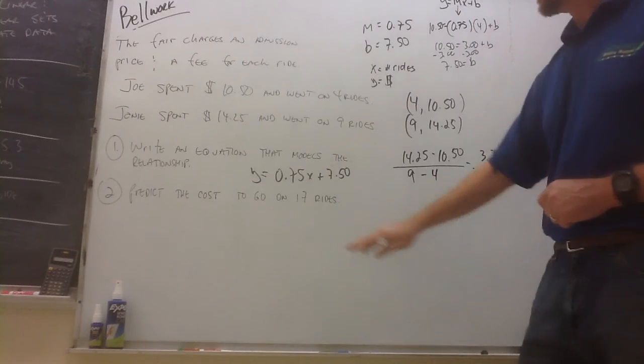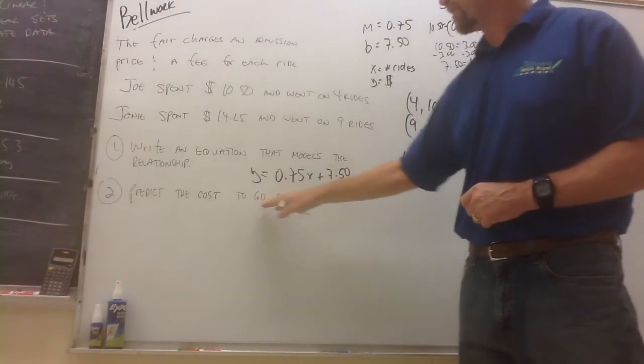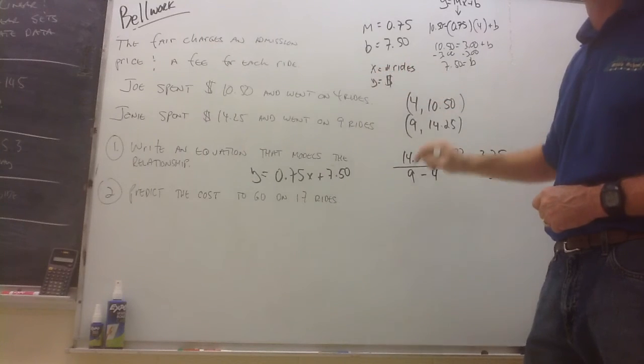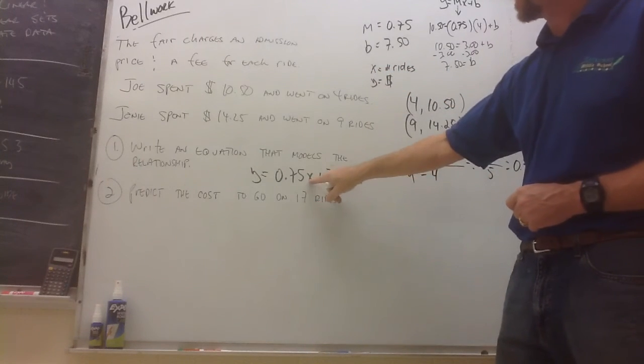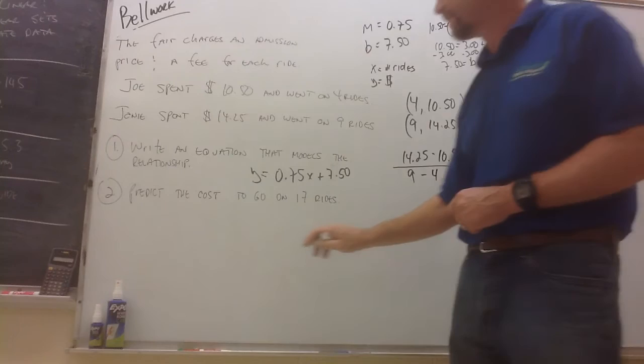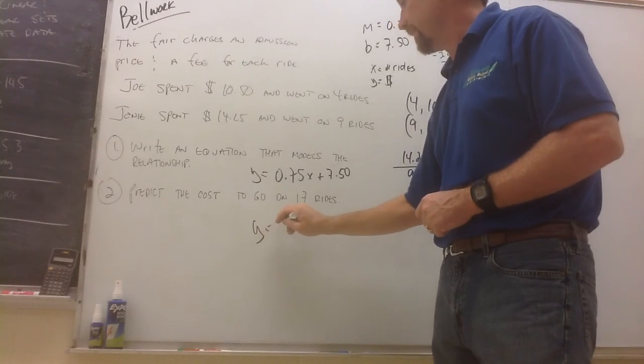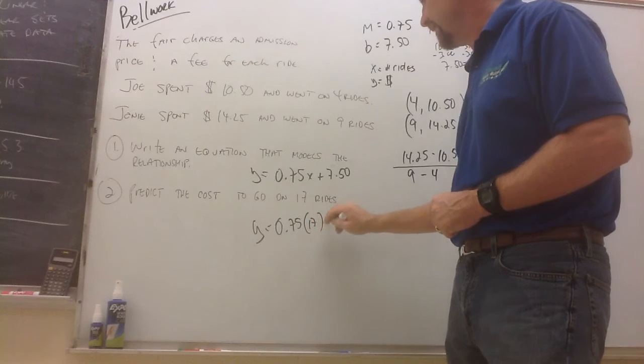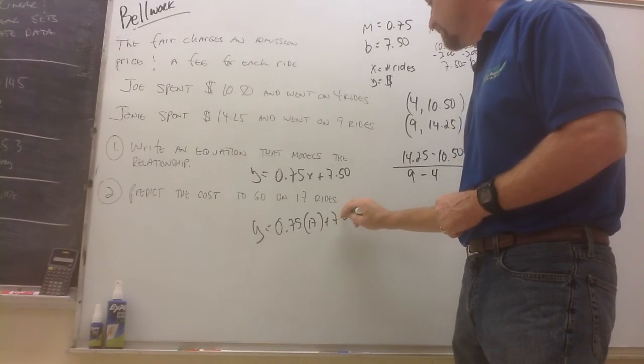All right. Now to do the second part of this, predict the cost to go on 17 rides. Well, remember, our x value is the number of rides, so let's replace this x with a 17. The total cost will be $0.75 times 17 plus $7.50.